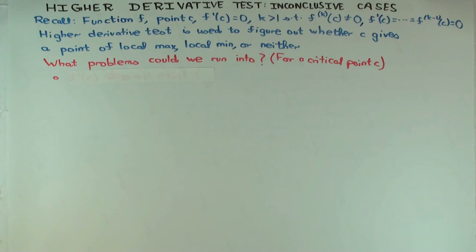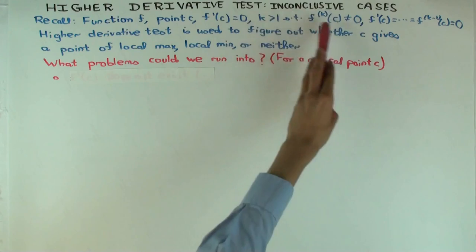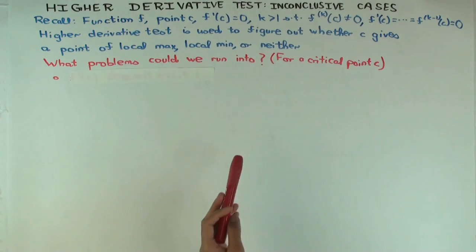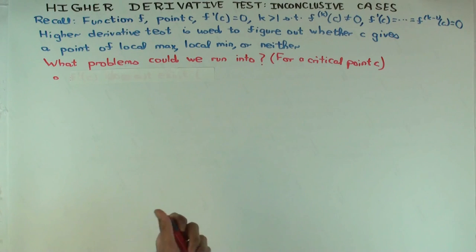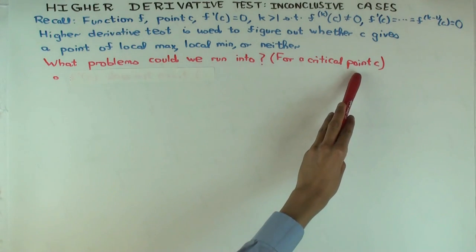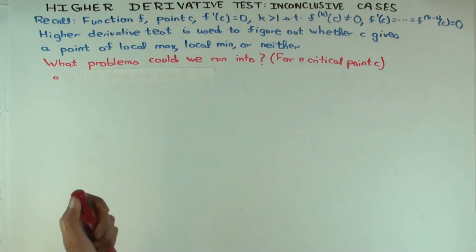So the problem with applying the higher derivative test is usually that you fail somewhere in this process. You have some, one of these conditions fails. So what type of problem could we run into?